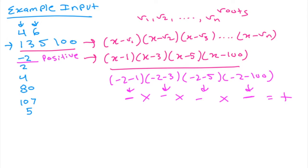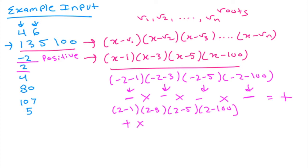Let's look at the example of x = 2. We compute (2-1)(2-3)(2-5)(2-100). That gives us 1, which is positive; -1, which is negative; -3, which is negative; and -98. Multiplying one positive integer by three negative integers results in a negative value, so our answer for x = 2 is negative.